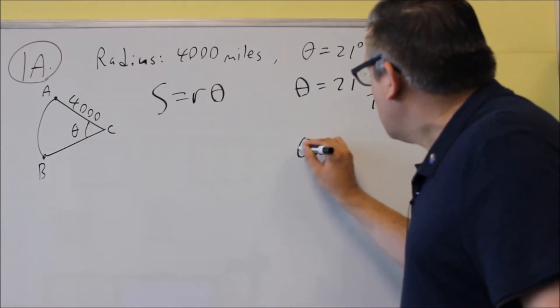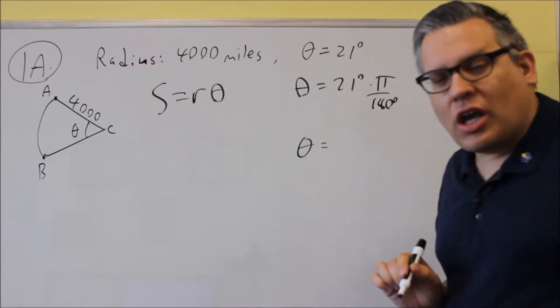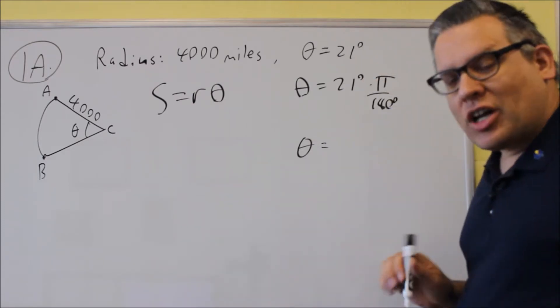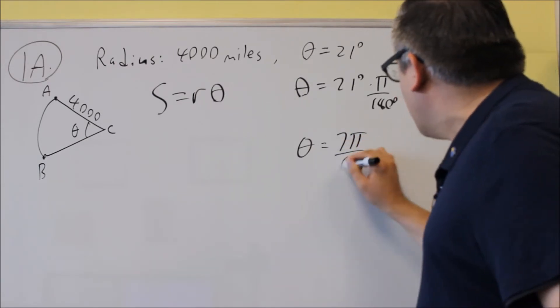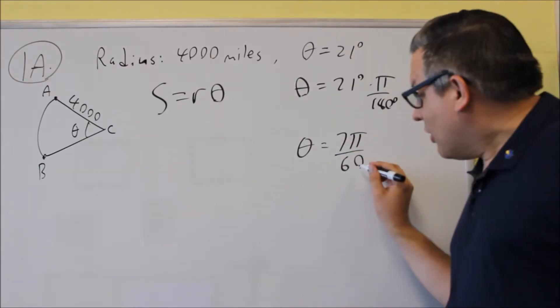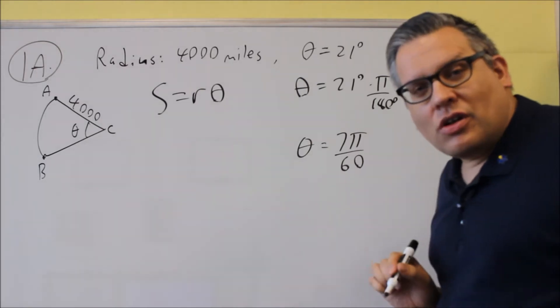And then we're going to reduce. So it's always better to reduce this if you can. So we're going to do 21 divided by 180. And by doing that, we'll get 7 pi over 60. And this is the theta that you want to use for this problem.